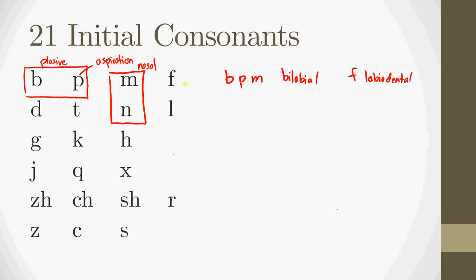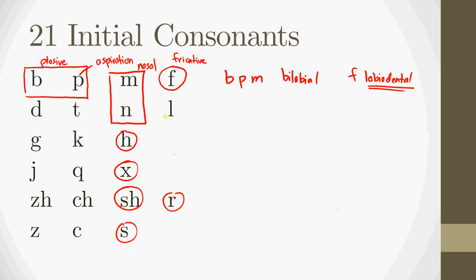F is a little bit different because it's labiodental — a slightly different location of articulation, specifically between the bottom lip and the top teeth — and it uses what's called a fricative articulation. The sound is actually made by air passing through the space between the lips and the teeth; the friction of the air is what creates the sound. Fricative means the air is being forced out through a small space. And in fact, h, x, sh, zh, and r are all fricative as well.